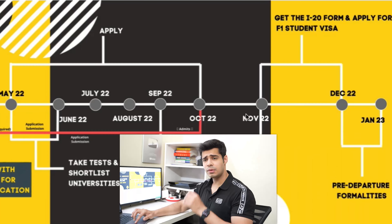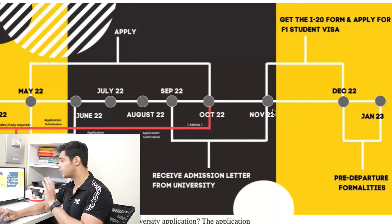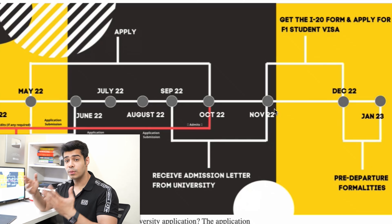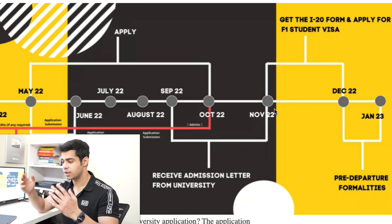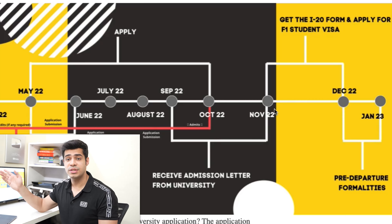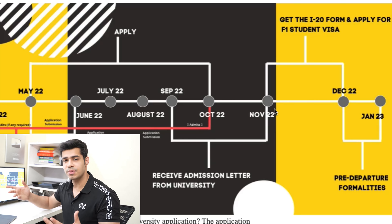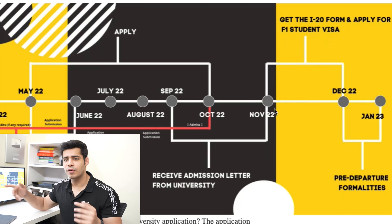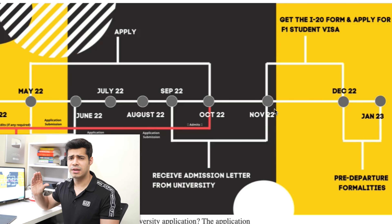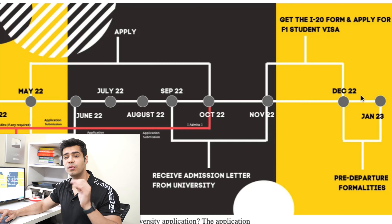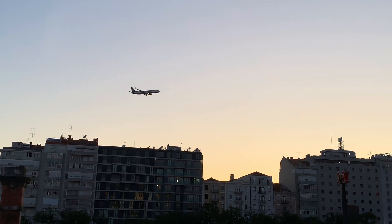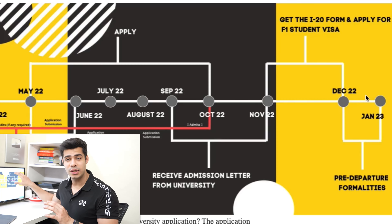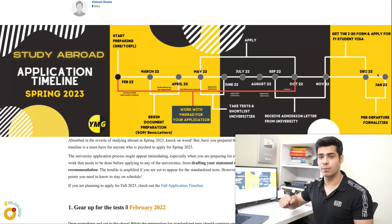Once you have your admission letter by November 2022, between November and December you'll receive your I-20 or acceptance letter depending on the country — Canada calls it a Letter of Acceptance, the US uses the I-20. With that, you can apply for your visa. Spring applicants have very little time — about one to one and a half months — because you fly out in January for your education overseas.